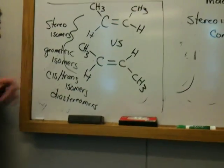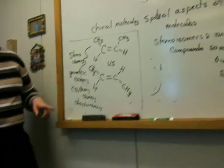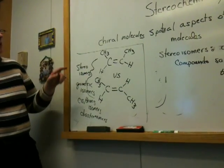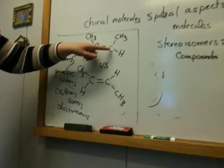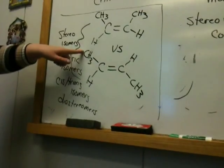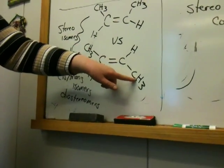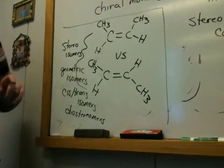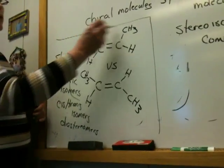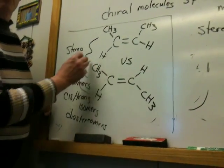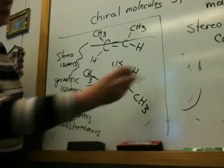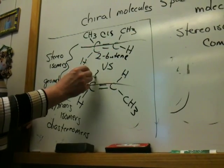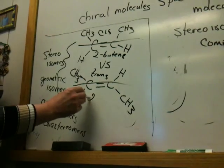You've probably seen this before. These molecules are stereoisomers. Why are they stereoisomers? They have the same connectivity: methyl group, carbon double bond, carbon double bond, methyl group — same connectivity. They have the same IUPAC name; they're both 2-butenes. But in this compound the two methyl groups are on the same side of the double bond, and in this compound they're on opposite sides. So this one is called cis-2-butene and this compound is called trans-2-butene.